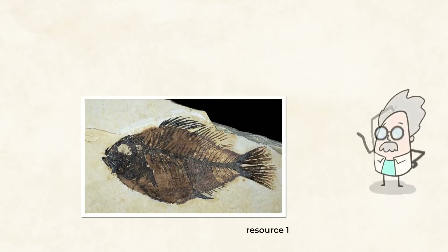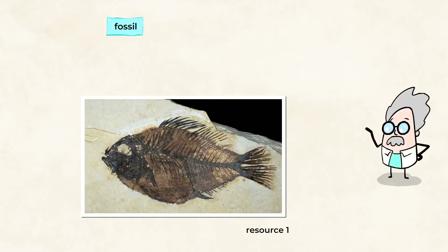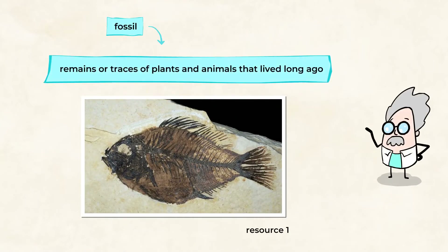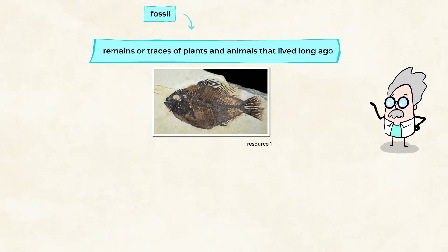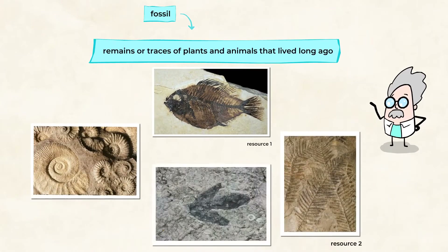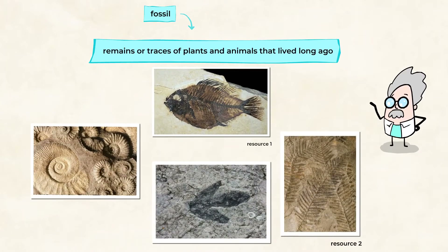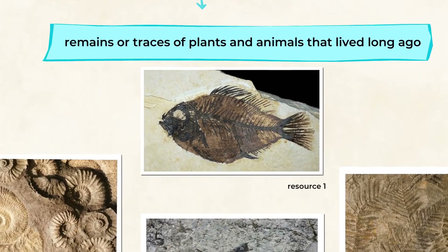This rock is a fossil. Fossils are remains or traces of plants and animals that lived long ago. Remains, meaning leftovers — kind of like an imprint, picture, piece, or a drawing. And this means that all fossils are from animals and plants that lived in the past, including the fish that you've just seen.